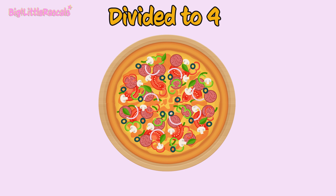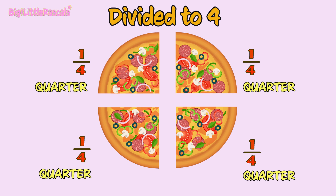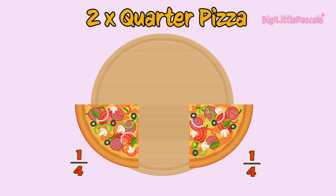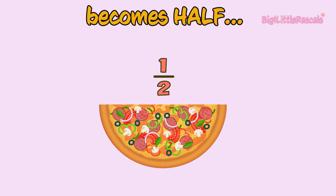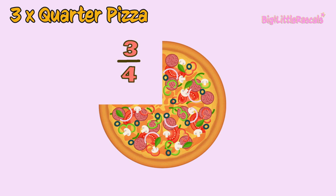But now, if I need to divide this pizza for four friends, then I need to divide this pizza into four, which is what we call a quarter. Each person will receive a quarter of a pizza. Half and quarter are fractions or portions of one whole. If we add up a quarter of a pizza with another quarter, it becomes half — one out of two. And if we add up three one-quarter pizzas together, it becomes three quarters — three out of four.